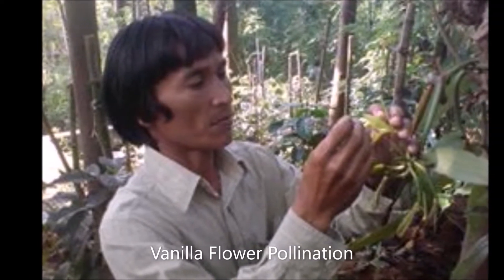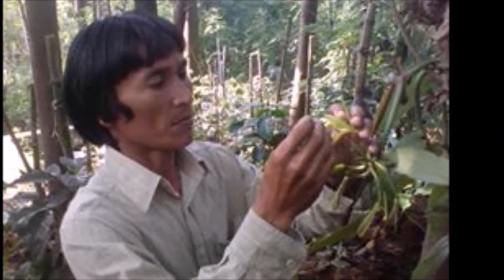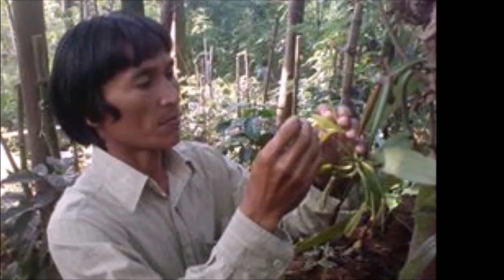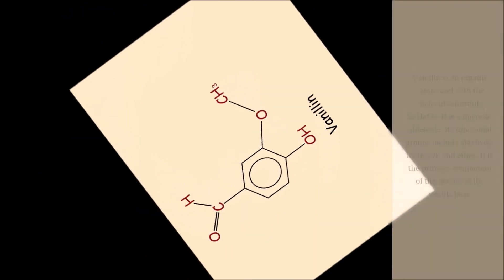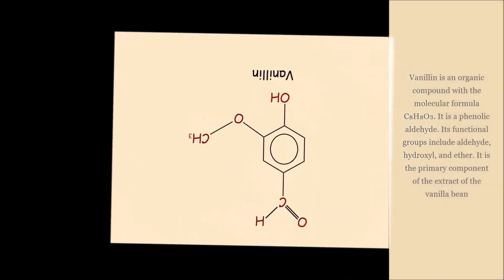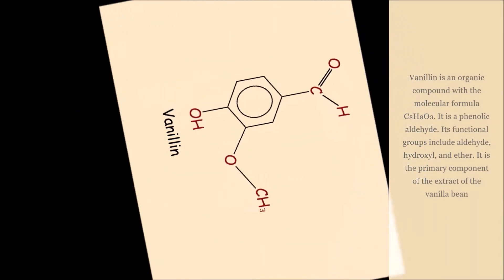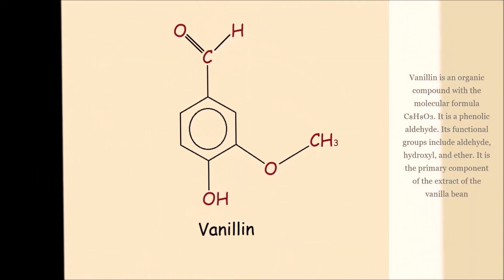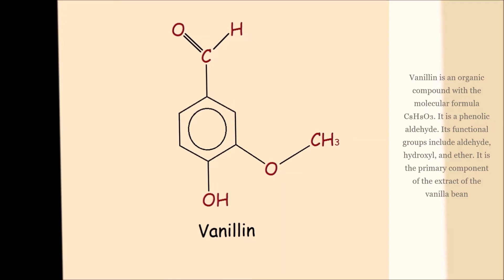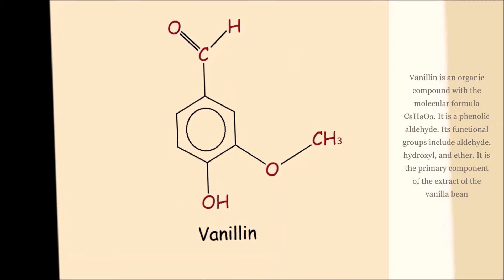Vanillin is an organic compound with the molecular formula C8H8O3. It is a phenolic aldehyde. Its functional groups include aldehyde, hydroxyl, and ether.